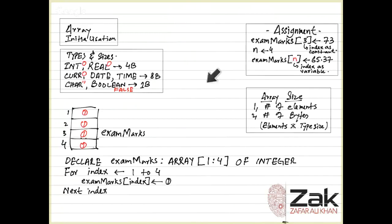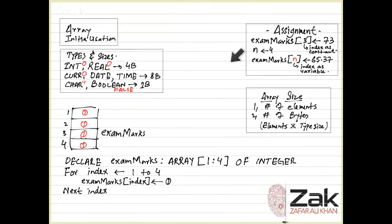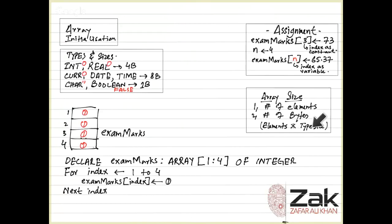When they ask for array size they may ask for two things: number of elements in the array, and number of bytes in the array. Number of elements means how many positions are there. Number of bytes means elements multiplied by the type size. If ExamMarks is of integer, every single element is 4 bytes. So with 4 elements: 4 multiplied by 4 equals 16 bytes. The size of the array is 4 elements and 16 bytes.